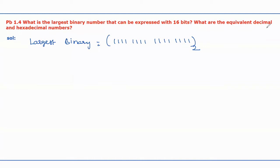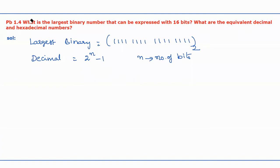Now coming to the second part of the question — the equivalent decimal and hexadecimal numbers for the above largest binary. The decimal equivalent should be obtained by using the formula 2 power n minus 1, where n is the number of bits used in the binary, which is equivalent to 2 power 16 minus 1, which equals 65535 in base 10, because it is a decimal number system with radix 10.